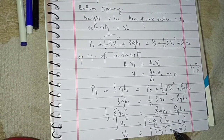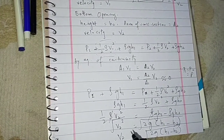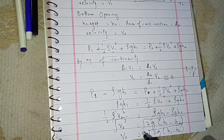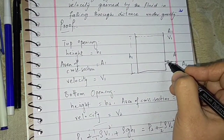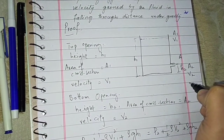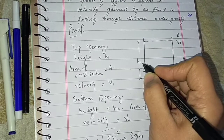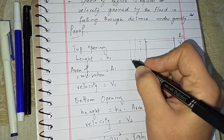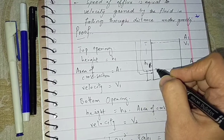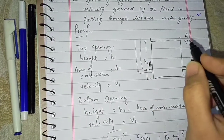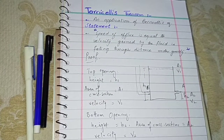This means the speed of the fluid at the opening will be the same regardless of whether the fluid is flowing downward or in any direction. So it was all about Torricelli's theorem — an example and an application of Bernoulli's equation.